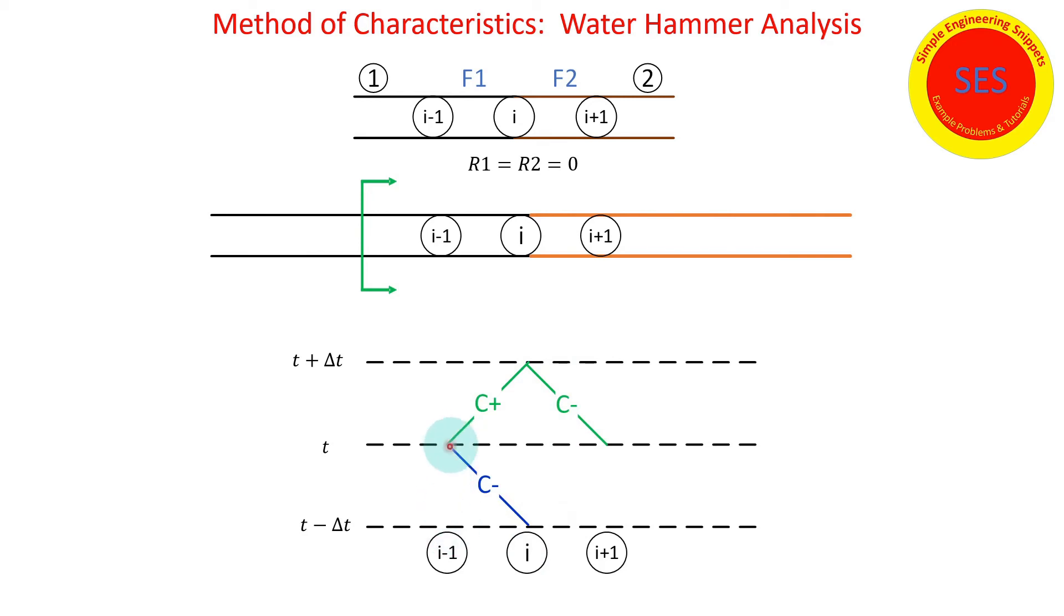So I'm going to be bringing the C minus characteristics from time level t minus delta t from node i to node i plus one. And then once again I got to look at the C minus and C plus characteristics to get the information at node i time level t plus delta t. It can be done.